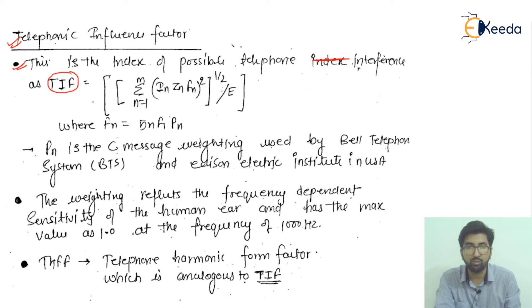Pn is the C-message weighting used by the Bell Telephone System (BTS) and Edison Electrical Institute in the US.